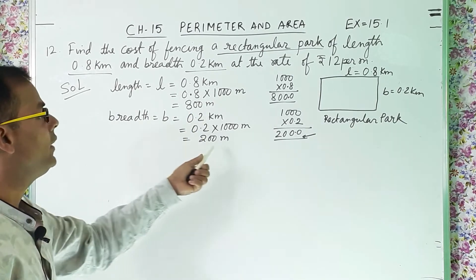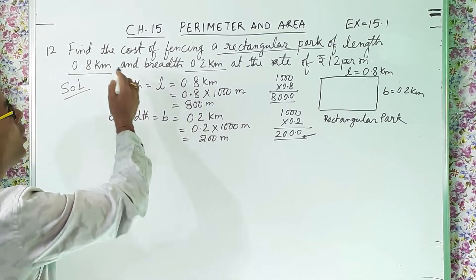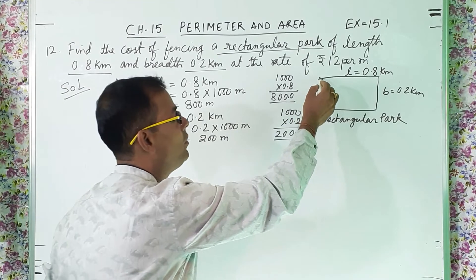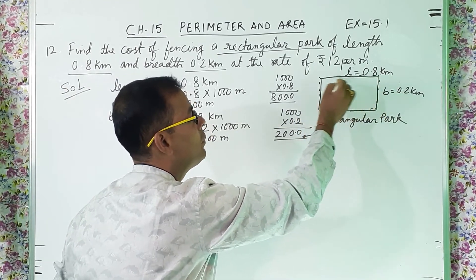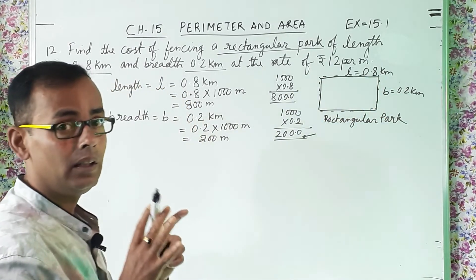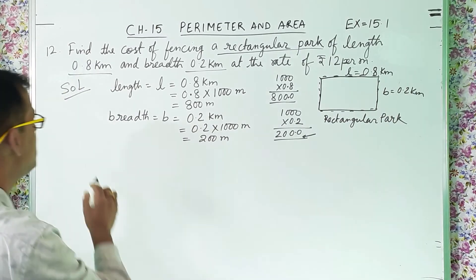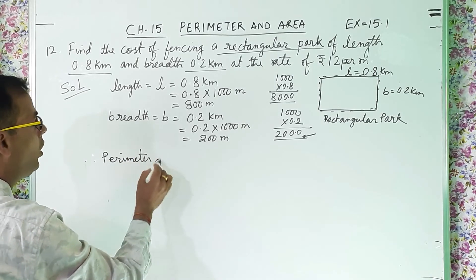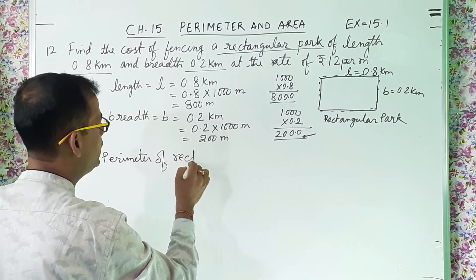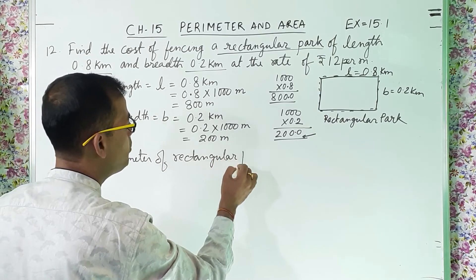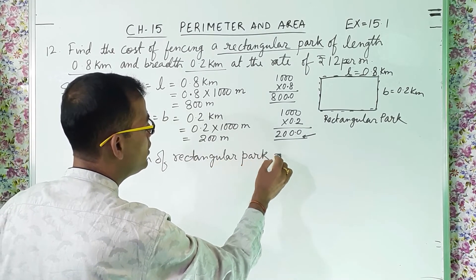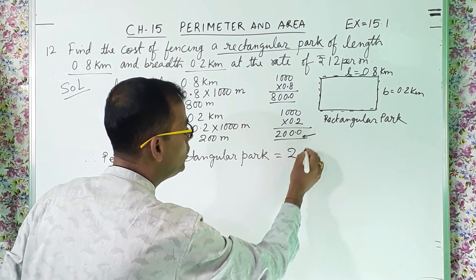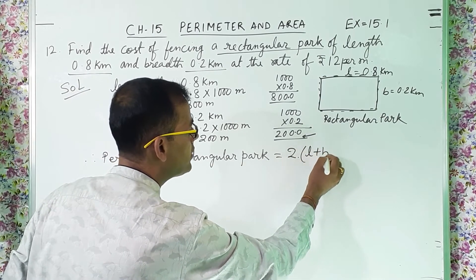Now they are telling cost of fencing, so like the previous sum, fencing is done along the borders, which means we have to find the perimeter. Therefore, perimeter of the rectangular park: the formula is 2 into (length plus breadth).